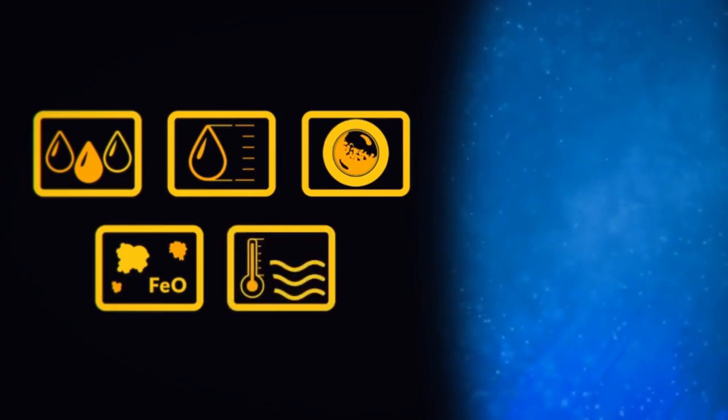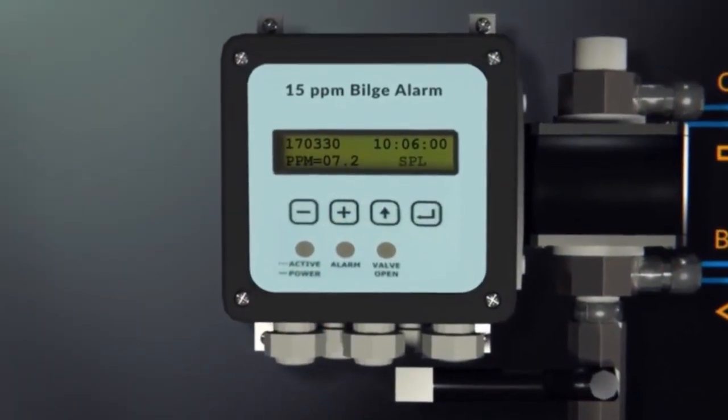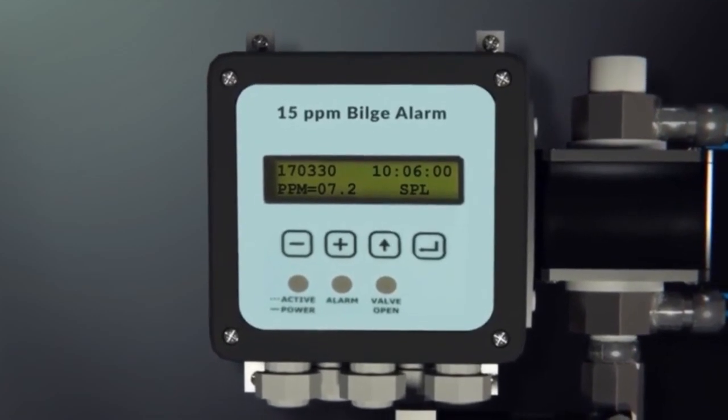A 15 ppm bilge monitor should record date, time, and alarm status and operating status of the separator. Data should be stored for at least 18 months.